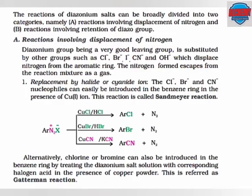Now we will discuss the chemical reactions of diazonium salts. The first one is replacement by halide or cyanide ion. Chlorine, bromine or cyanide nucleophiles can easily be introduced in the benzene ring in the presence of copper(I) ion. This reaction is called Sandmeyer's reaction. Alternatively, chlorine or bromine can also be introduced in the benzene ring by treating the diazonium salt solution with the corresponding halogen acid in the presence of copper powder. This is referred to as Gartermann reaction.